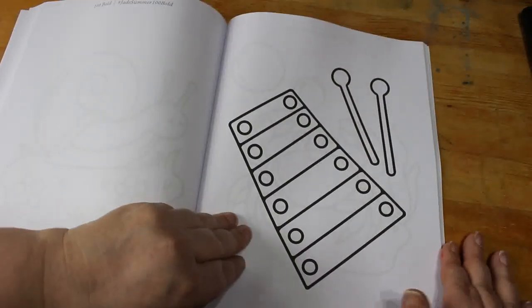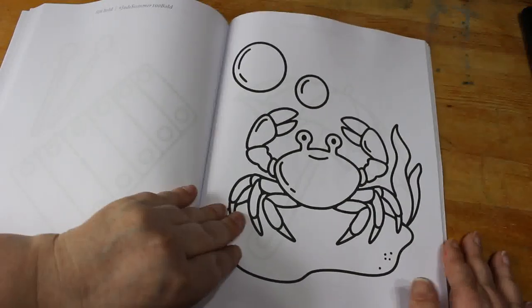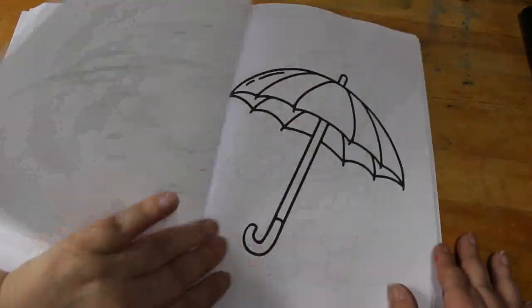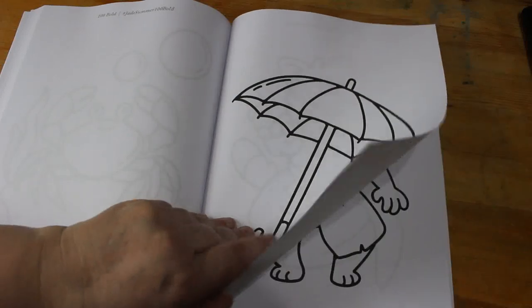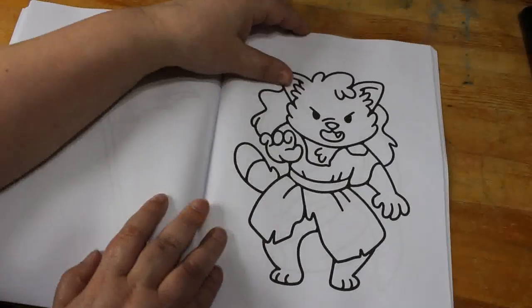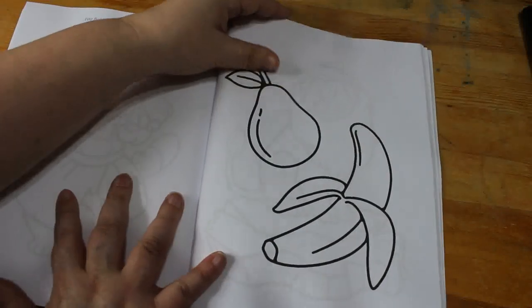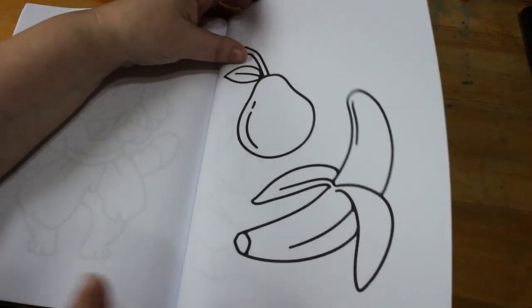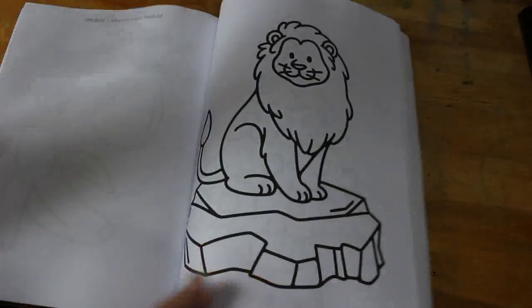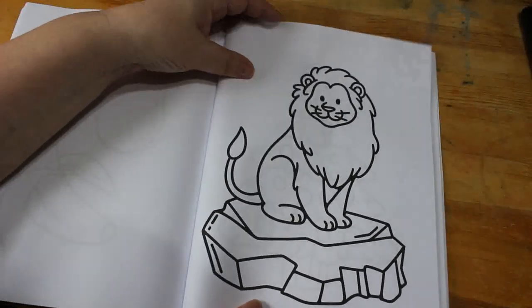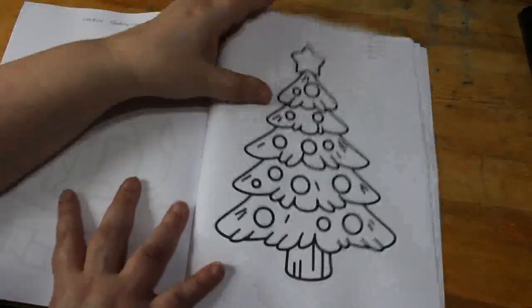Snail, xylophone, ha ha, lovely. They're just so simple, they're going to be nice to just color whether it's with gel pens and glitter or I don't know. The lion's nice, markers or pencils.